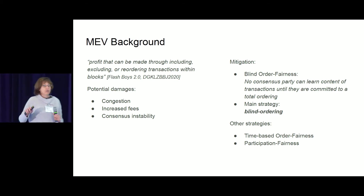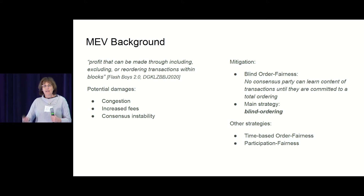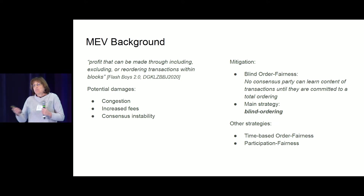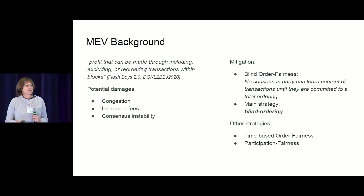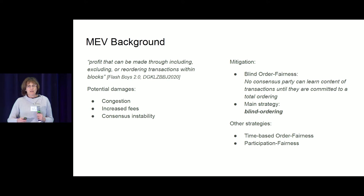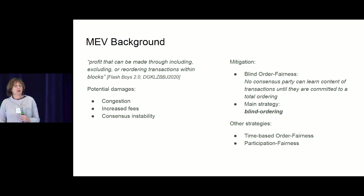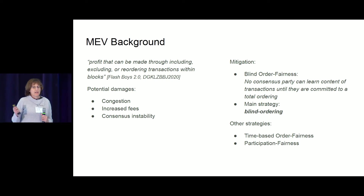If you want to protect against MEV, I want to focus on one particular mechanism: blind ordering — committing to the ordering of transactions without seeing transactions in the clear, and only opening them after commitment. This is one of the most immediate mitigation strategies you can employ and it's pretty darn effective. The question is how you implement it at the throughputs of BFT blockchains and BFT consensus mechanisms like the ones being developed on DAGs — and that is what this talk is about.